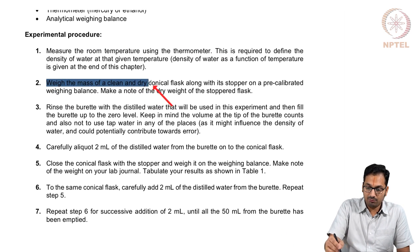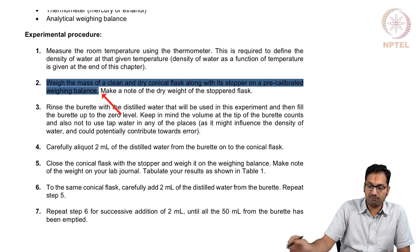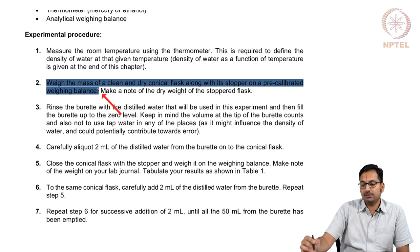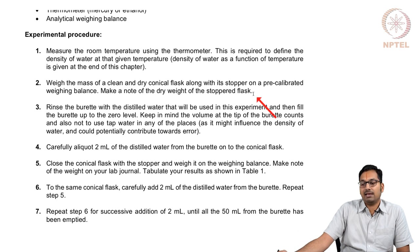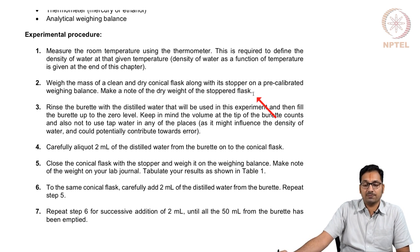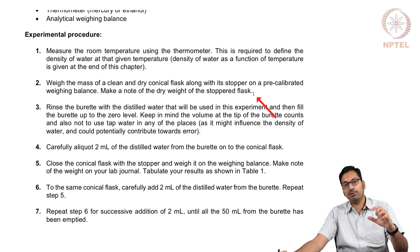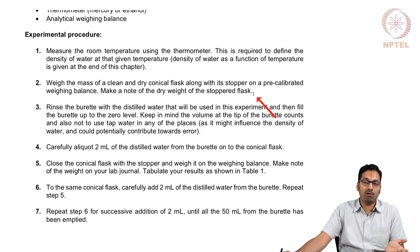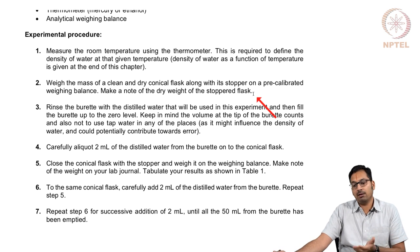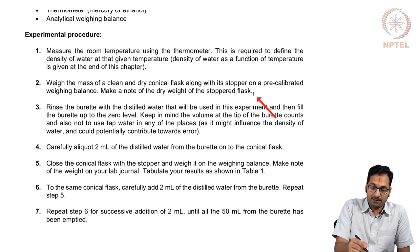The next step is to weigh the mass of the dry conical flask. This is done because this flask is where you will be adding different volumes of water to measure how much comes out. So this helps you understand: if you are aliquoting a certain volume V from the burette and you can measure the same volume by getting the mass and multiplying by density, you will be able to confirm you are doing what you anticipated.